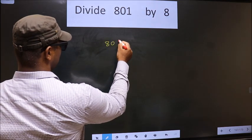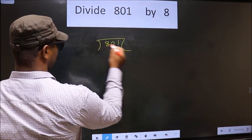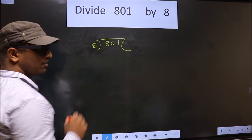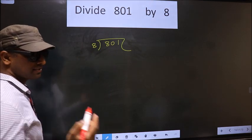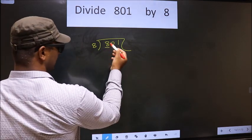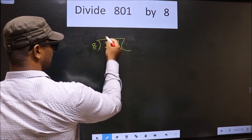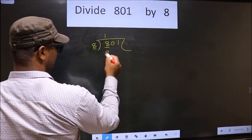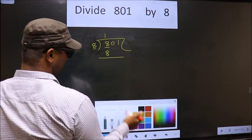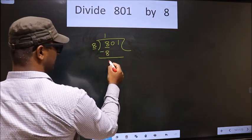That is 801, 8 here. Next, here we have 8, here also 8. When do we get 8 in 8 table? 8 once, 8. Now you subtract. 8 minus 8, 0.